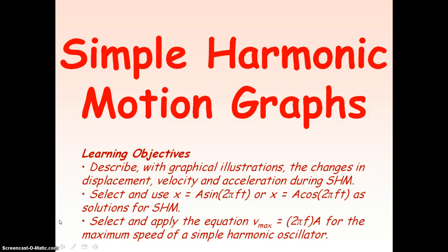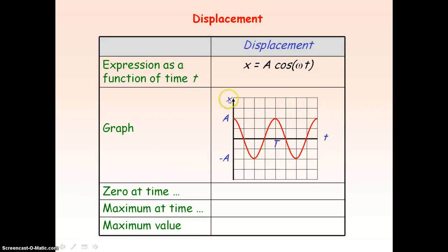We're going to be looking at the graphs for simple harmonic motion. We're first going to look at the displacement of an object oscillating under simple harmonic motion and see how its displacement changes with time. The equation for it is x = a·cos(ωt), where x is the displacement, a is the maximum displacement or amplitude, omega is the angular frequency which equals 2πf, and t is our time.